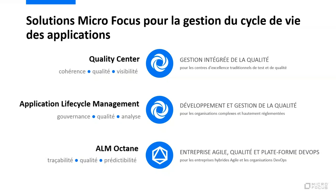Son grand frère, c'est ALM — Application Lifecycle Management — qui reprend les mêmes concepts que Quality Center mais les étend pour l'entreprise. On va non seulement être capable de gérer un projet, mais également mettre en place des bonnes pratiques, des templates réutilisables, partager des assets entre projets, et mettre en place un reporting transverse qui, dans le cadre d'un centre d'excellence, permettra de connaître la qualité d'un ensemble d'applications gérées à travers ALM.